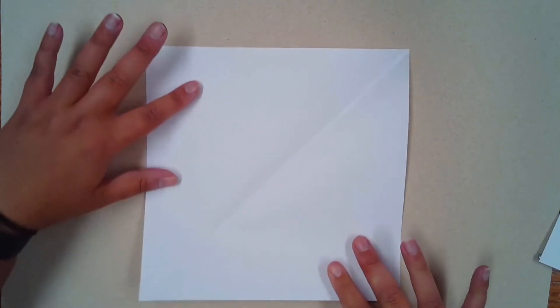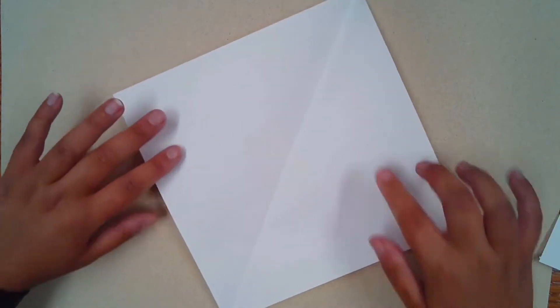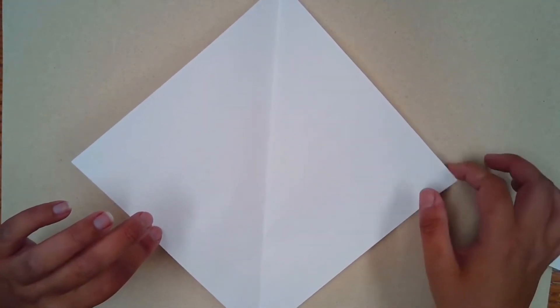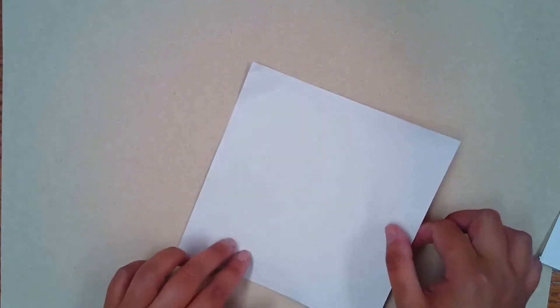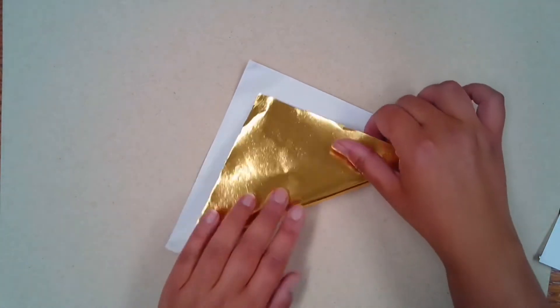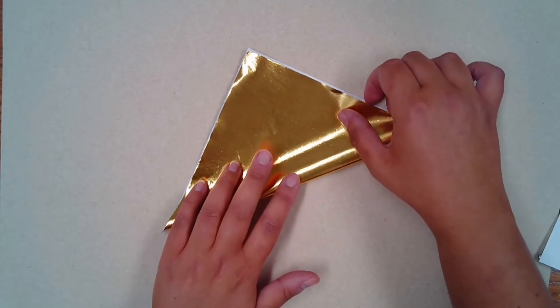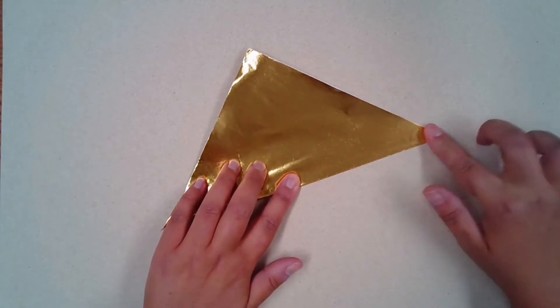You then have a square and you actually are going to want this diagonal line down the center. If you are already starting out with a square, then your first step would be to fold one corner to another to create that line down the center.